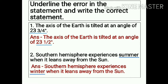Number 1. The axis of the earth is tilted at an angle of 23 and 3/4th degree. The error in this statement is '23 and 3/4th degree.' The correct statement is: the axis of the earth is tilted at an angle of 23 and a half degree.